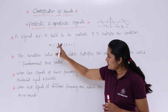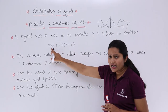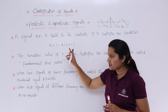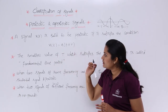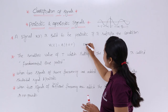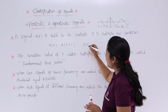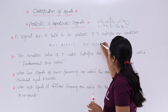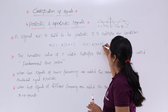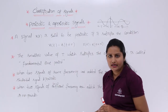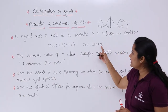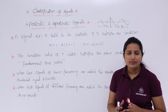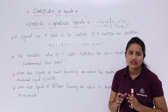So, x(t) = x(t + T) for continuous-time signals. In the discrete case, x(n) = x(n + N), where N is the discrete time period and capital N refers to the fundamental time period in discrete.